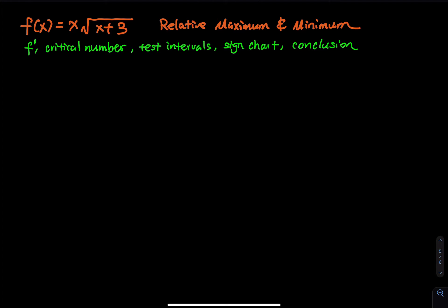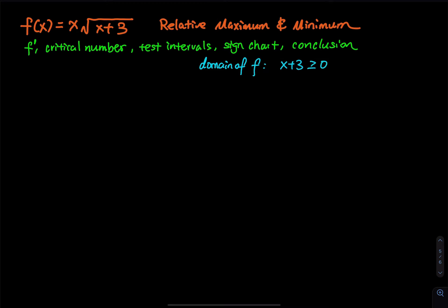So what's the domain? The square root of a negative is undefined — the square root of negative 4 is undefined, you can use your calculator to check. So the domain of f requires x plus 3 to be greater than or equal to 0, which means x must be greater than or equal to negative 3, because the square root of a negative is undefined.